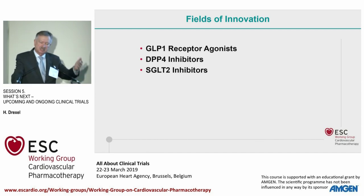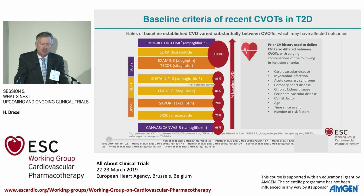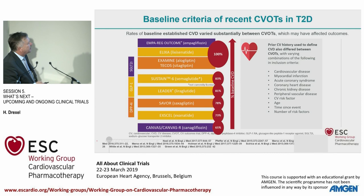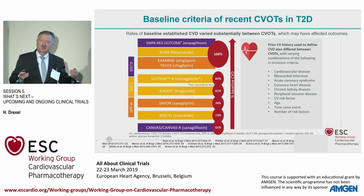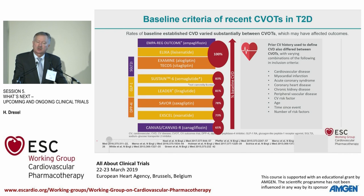Three fields of innovation from last year are: GLP-1 receptor agonists, DPP-4 inhibitors, and — I think the most interesting class — SGLT2 inhibitors. Looking at the populations studied, for cardiology it is important to see how many percent had already established cardiovascular disease. For example, EMPA-REG Outcome and ELIXIR had 100%, whereas CANVAS had only 65% baseline cardiovascular disease. So before judging class effects, we must recognize we are looking at different populations — probably not fully comparable.